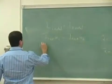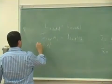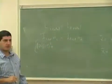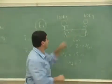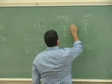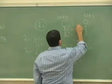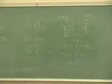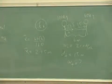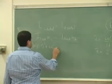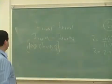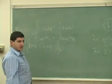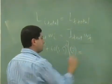Plus the moment of inertia of the 60 kilogram person, which is 60 times — what's this distance going to be? If this is 2.5, that's 3.5, right? So 60 times 3.5 squared. Omega initial is given as 2 radians per second.